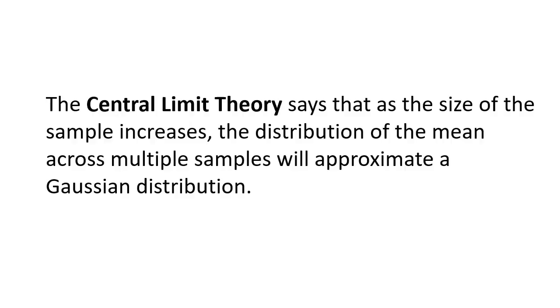The central limit theorem is an often-quoted but misunderstood pillar of statistics and machine learning — it's often confused with the law of large numbers. It has important implications on how and why we make inferences about the skill of a machine learning model, such as whether one model is statistically better than another and confidence intervals on that model's skill. The theorem states that as the size of a sample increases, the distribution of the mean across the samples will more approximate a Gaussian distribution.